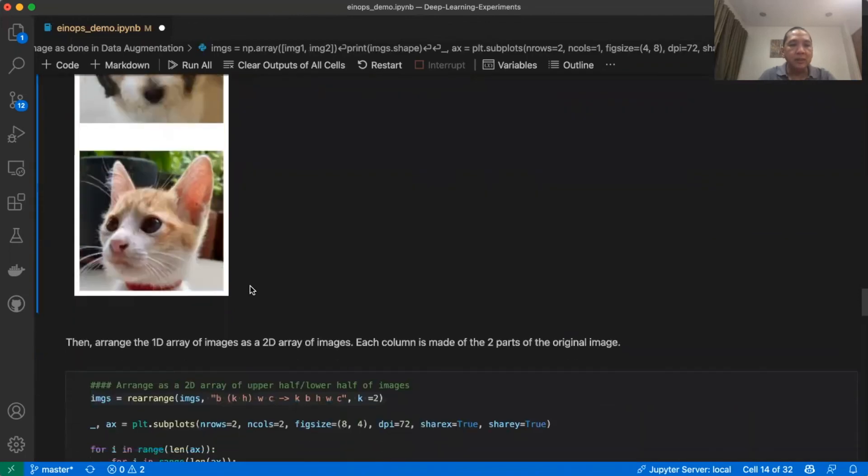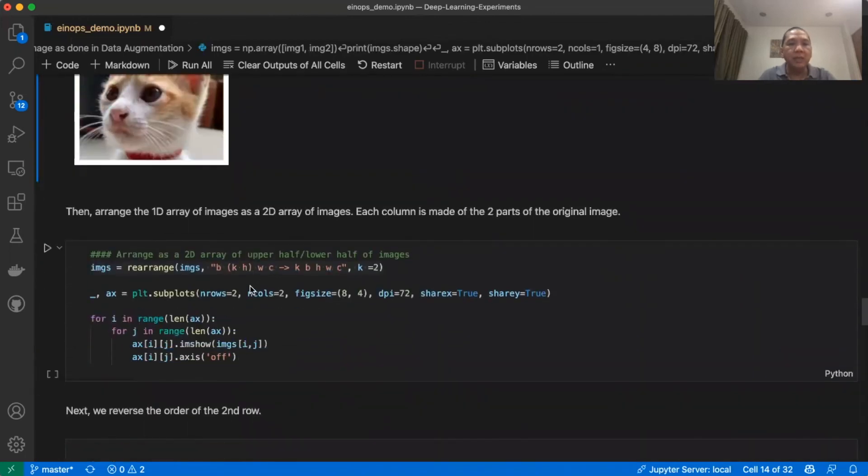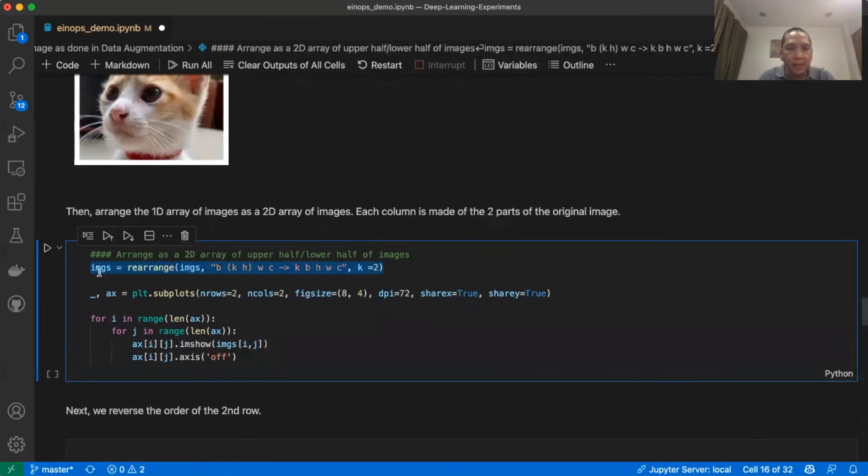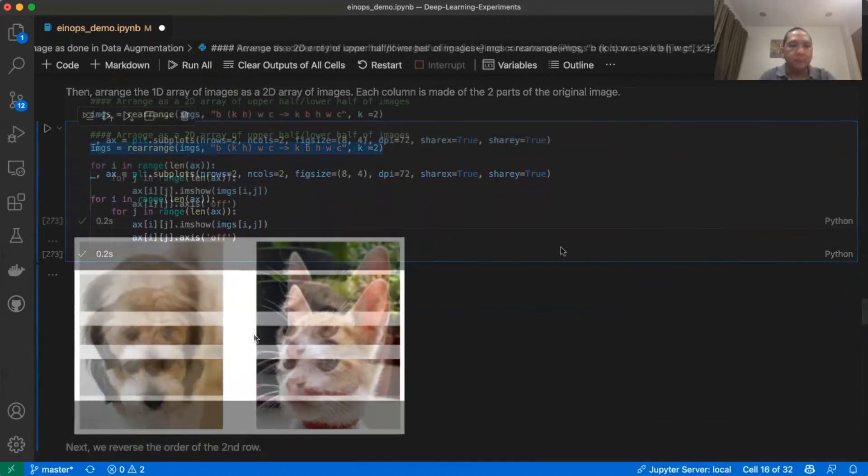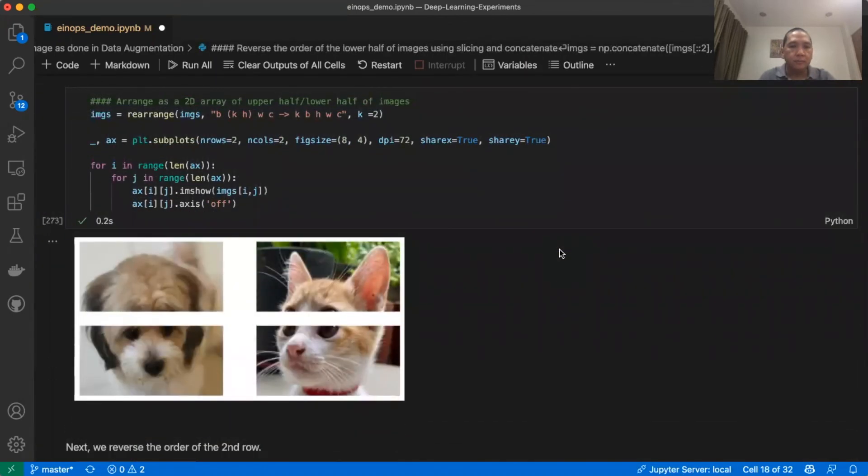Next, we will arrange the 1D array of images as a 2D array of images. Each column is made of two parts of the original image. This is done by using rearrange. Let's execute this code. This will be the resulting 2D array of upper half and lower half of images.